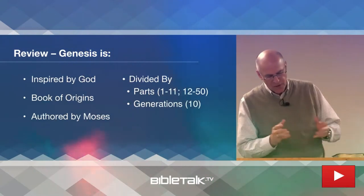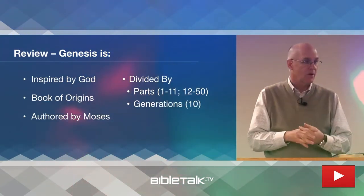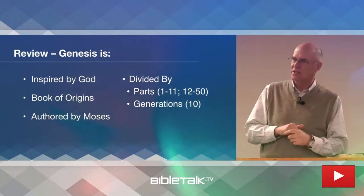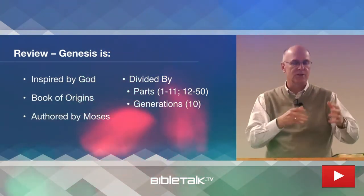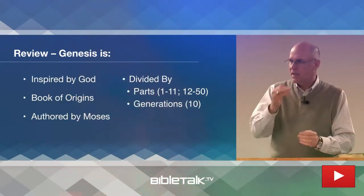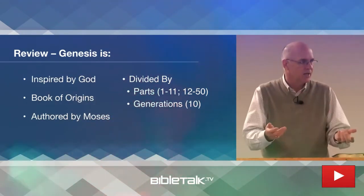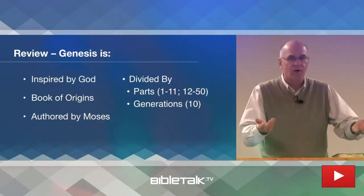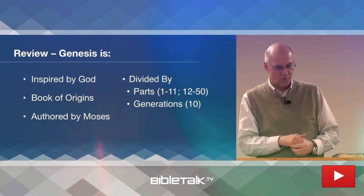We talked about the nature of the book — what's it about? We said that it's about origins. If somebody ever asked you what is the book of Genesis about, really, it's about origins. It tells us where things originated: society, where did society originate, where did the world come from, where did sin come from, and so on.